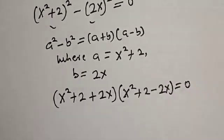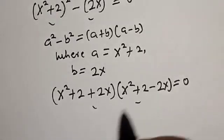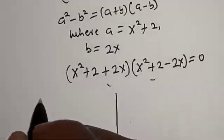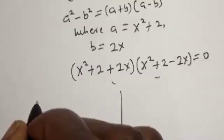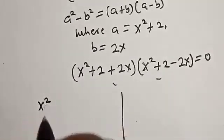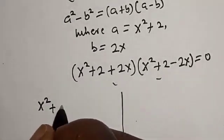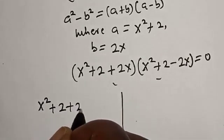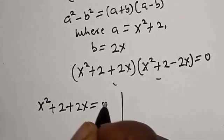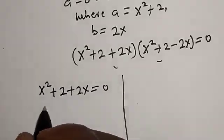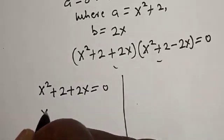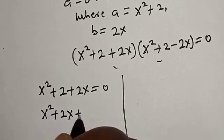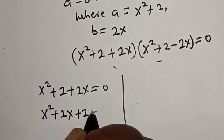Now we have two cases here. The first case is x squared plus 2 plus 2x is equal to 0. If we rearrange, we have x squared plus 2x plus 2 is equal to 0.